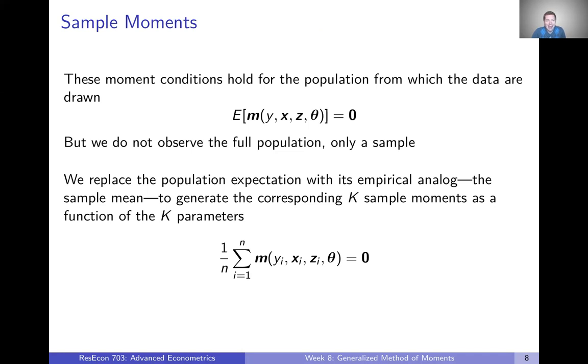We have these k-moment conditions that hold for the population from which our data are drawn. If somehow we could observe the full population, we could just calculate these things, but we don't observe the full population. We only observe a sample. So what we're going to do is replace that population expectation with its empirical analog, the sample mean. The intuition here is if these conditions hold in expectation in the population, then they should also hold on average in our sample.